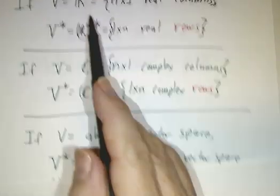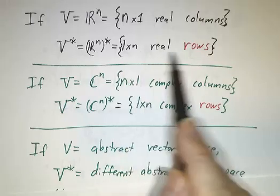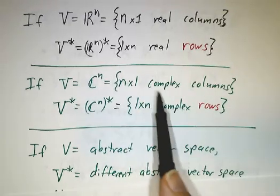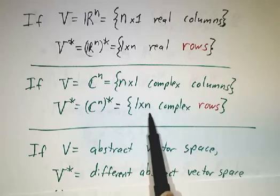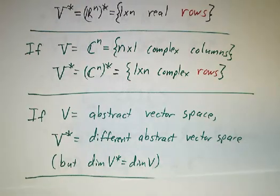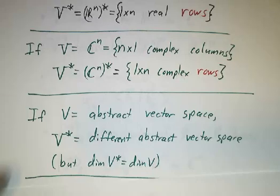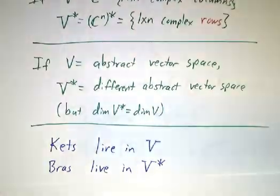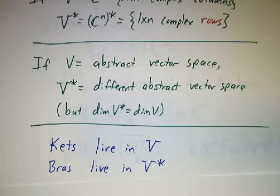The set of all n by 1 columns is n dimensional and the set of all 1 by n rows is n dimensional. This is true in general: as long as V is finite dimensional, the dimension of V star always equals the dimension of V. They're different vector spaces, but they have the same dimension. In general, kets live in the vector space, bras live in the dual space.